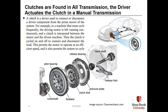Clutches are found in all transmissions. The driver actuates the clutch in a manual transmission, and the clutch is automatically engaged in an automatic transmission. A clutch is used to connect or disconnect the driven component from the prime mover of the system. In a machine that must cycle frequently, the driving motor is left running continuously and a clutch is interposed between the motor and the driven machine, then cycled on and off to connect and disconnect the load. This permits the motor to operate at an efficient speed.